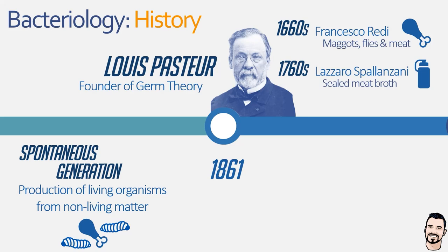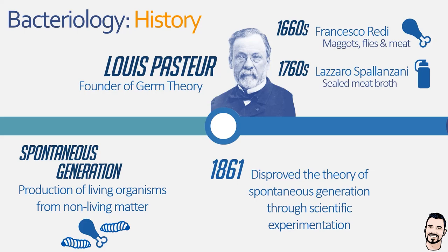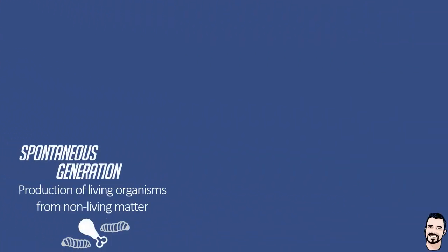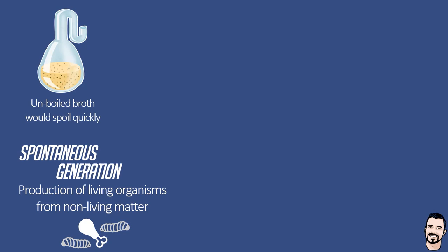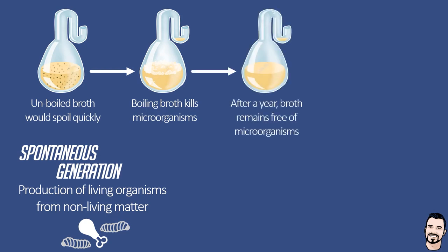Both scientists laid the foundations for Pasteur's work, and in 1861 he was able to disprove the theory of spontaneous generation through the use of a swan neck flask. He started by placing a nutrient-rich broth in a swan neck flask, which quickly spoiled as microorganisms grew. He then took a second flask, added meat broth, rapidly boiled and cooled the liquid, killing anything in the flask. He left it untouched for a year, and it remained free of microorganisms despite not being sealed — showing that microorganisms did not spontaneously generate from nutrient-rich broth.